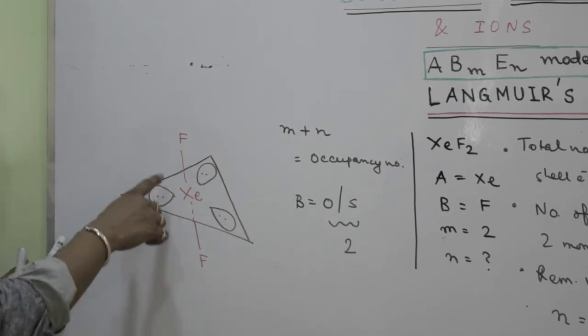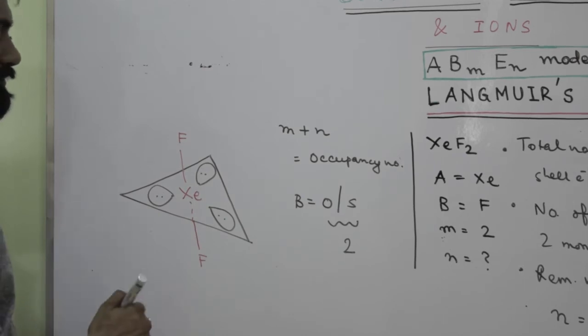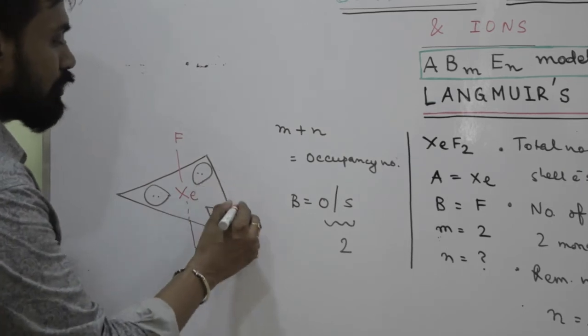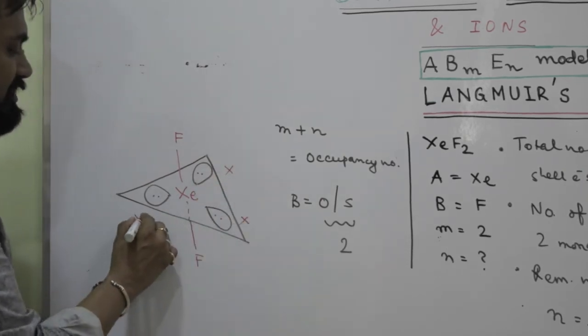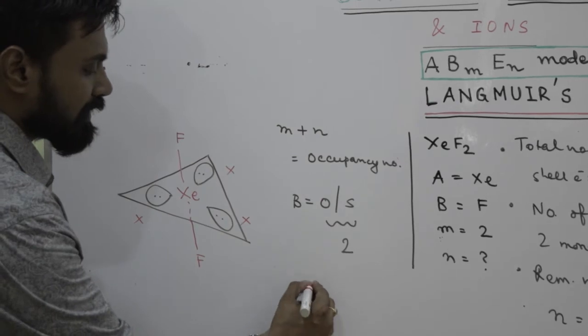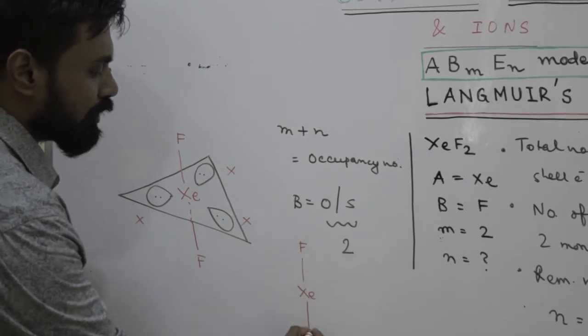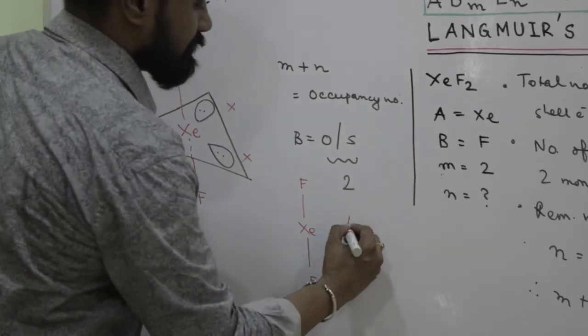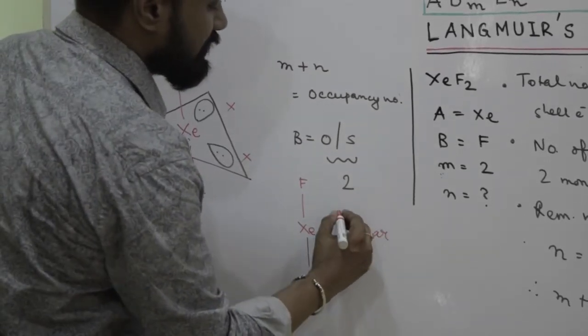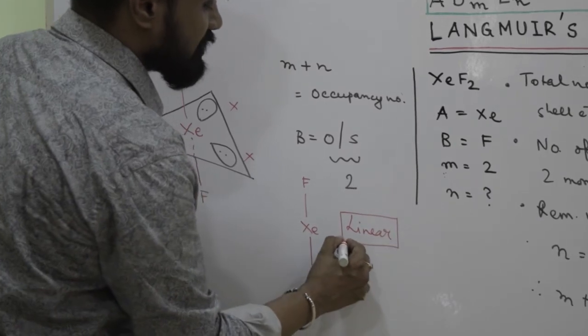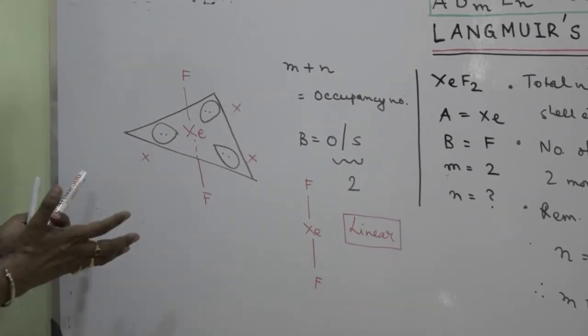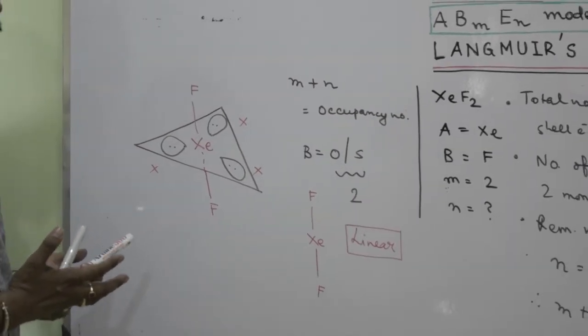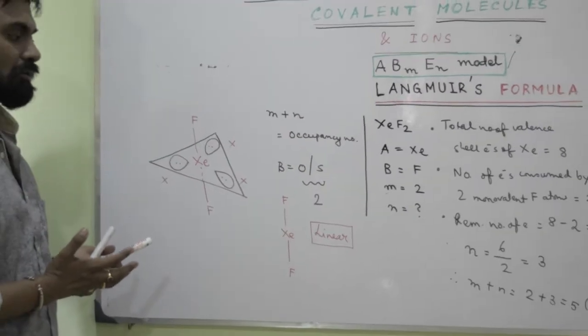So if we now say what is the shape of the molecule, lone pairs have to be excluded. This is very important. Lone pairs have to be excluded. We must exclude the lone pairs. So if we exclude the lone pairs and only include the bond pairs, the geometry comes to be linear. So this is very important: what is geometry and shape, and what is structure? Structure includes everything, the bond pair as well as the lone pair, but when we are talking about the shape we should only take the bond pair.